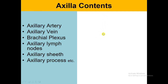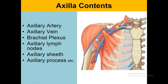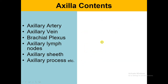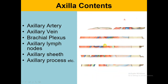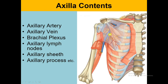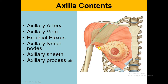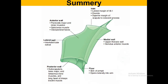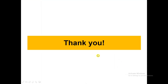Talking about the content of the axilla is very important. We have the axillary artery, axillary vein, and the brachial plexus — all embedded in the axillary sheath — as well as axillary lymph nodes and the axillary process of the breast. Some writers also consider the proximal part of the bicep and the coracobrachialis muscle as content of the axilla. In summary, the axilla has an inlet, a floor, an anterior and posterior wall, and a medial and lateral wall, along with its contents.